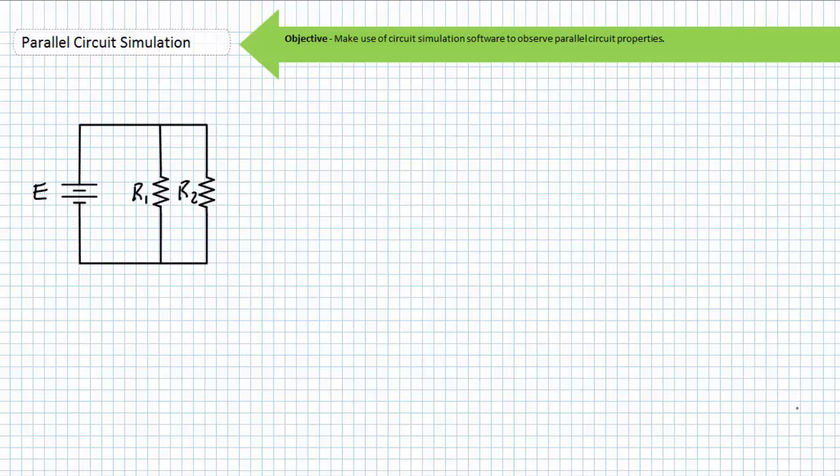As a refresher, circuit simulation software consists of a library of modeled components which can be selected and placed into a blank workspace and then tied together using virtual wires. The simulator allows electrical properties to be observed from the comfort of your desk. Ideally, those values displayed on the virtual instruments are very close to those attained via calculation or real hands-on observation.